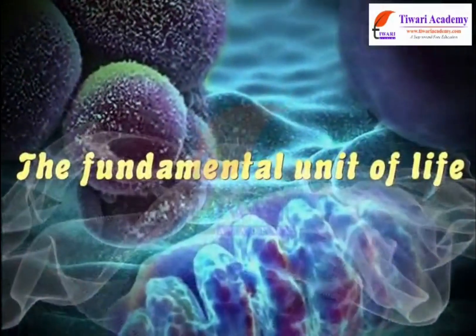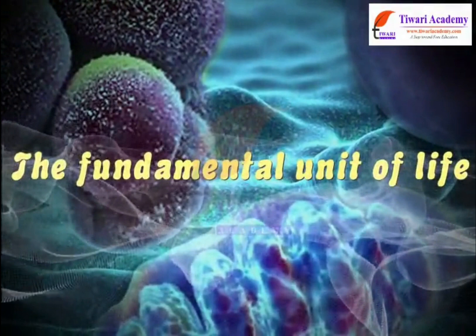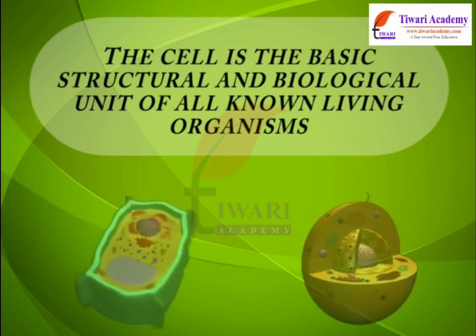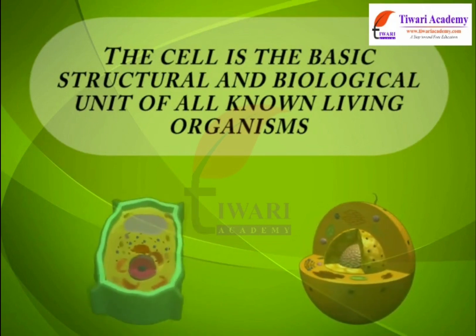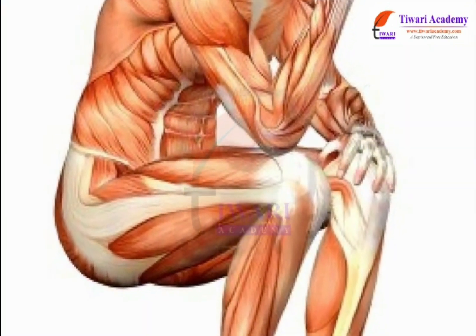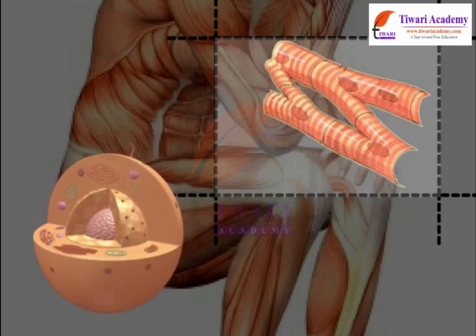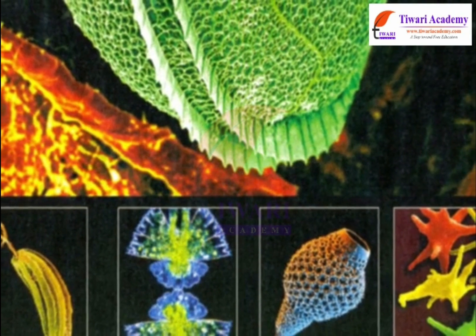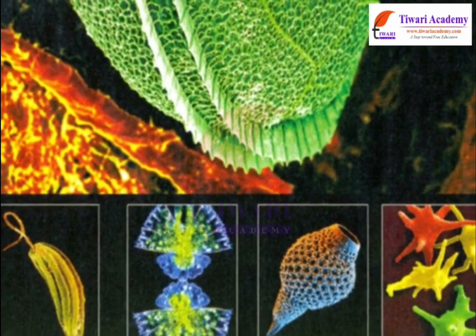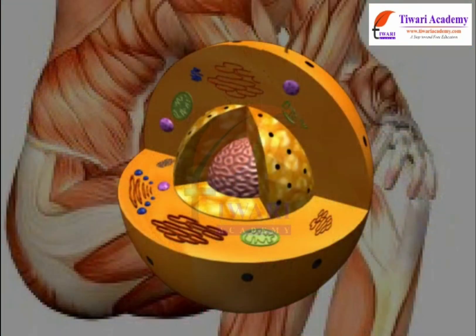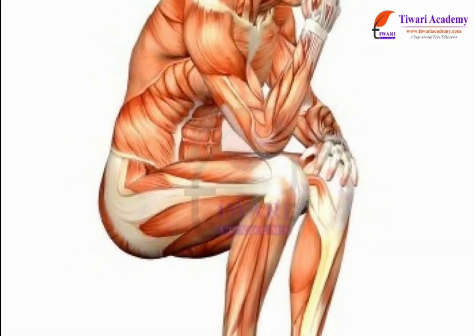The cell is the basic structural and biological unit of all known living organisms. A cell is the smallest unit of living organisms that is capable of carrying out all the activities of life. Some organisms consist of only one cell, for example amoeba, while others may have several billion cells.